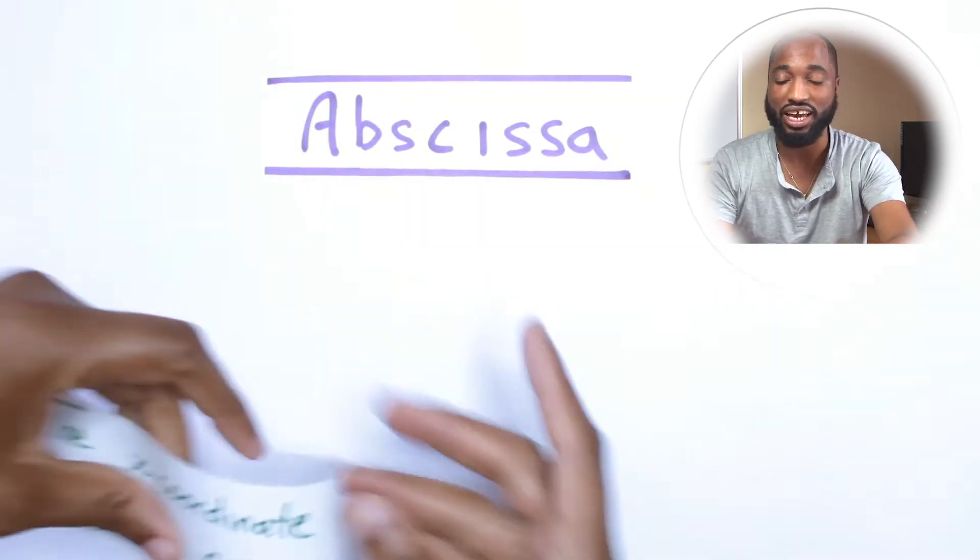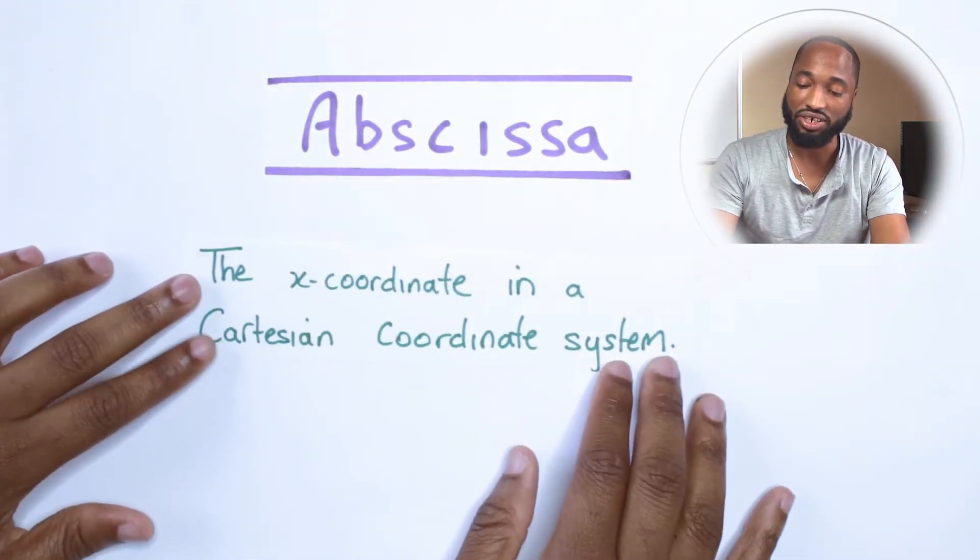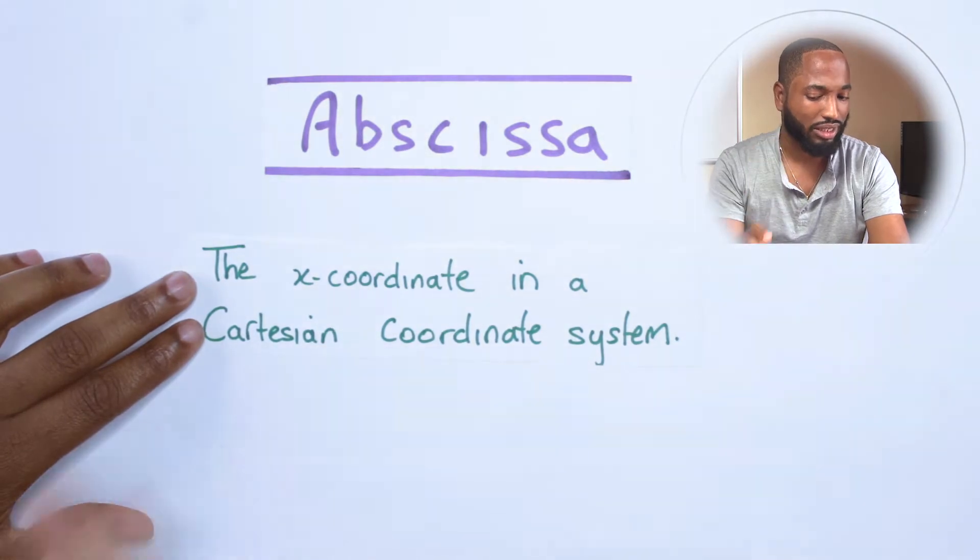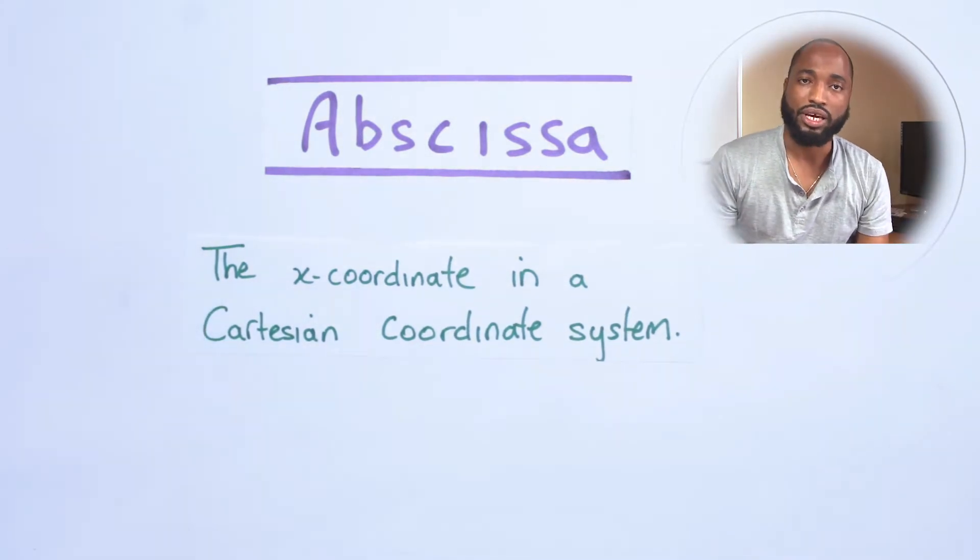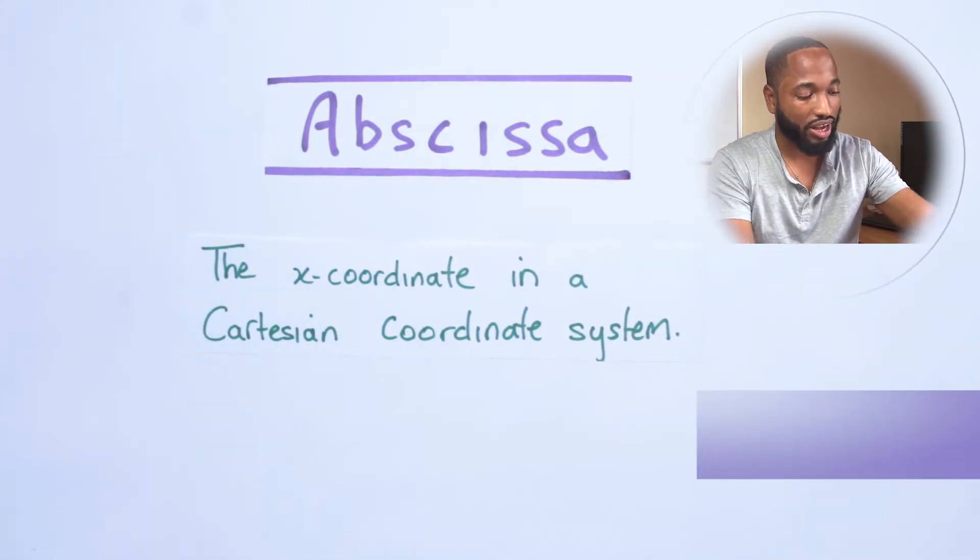Abscissa is just the x-coordinate in the Cartesian coordinate system. That's an awesome kind of way. The x-coordinate, remember if you have a group of values, a pair of values.